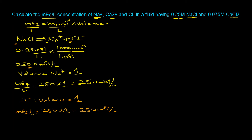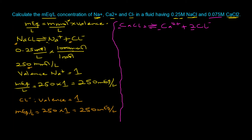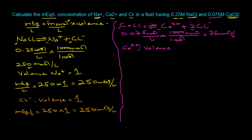Now for calcium chloride: in aqueous solution, it dissociates into one calcium cation and two chloride anions. One mole of CaCl₂ gives one mole of Ca²⁺ and two moles of Cl⁻. From the question, 0.075 molar CaCl₂ means 0.075 moles per liter. Converting: one mole equals 1000 millimoles, giving 75 millimoles per liter.